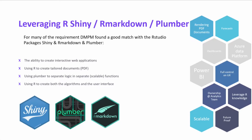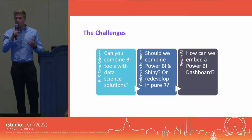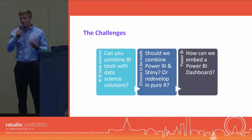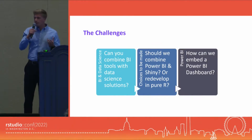Since R is an open-source language, several packages are available. Together with DMPM we chose R Markdown, Shiny, and Plumber. This allowed us to create interactive web applications. Using R Markdown, we generated tailored documents like PDFs. We used Plumber to separate logic into different functions. We faced challenges on both the BI and data science level as well as on the Azure level — whether to combine BI tools with data science solutions, and whether to use Power BI, Shiny, or pure R.